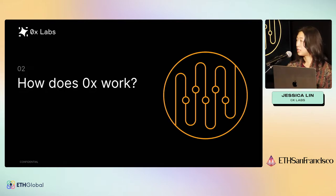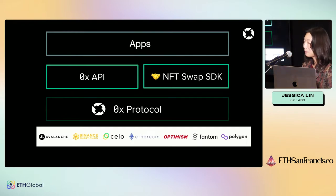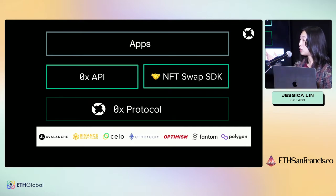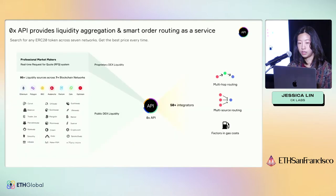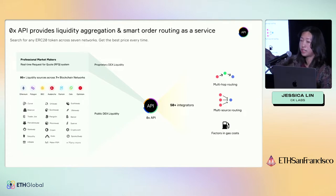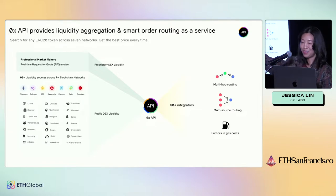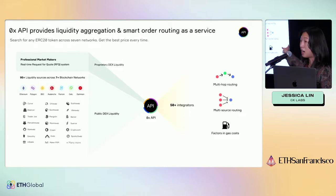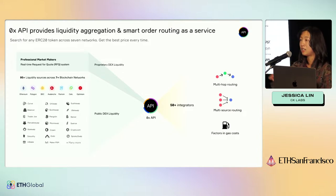Let's dive into how 0x works. We saw those different layers: the protocol, which is the smart contracts, and the API. The API works by aggregating across market makers — whether that's professional market makers providing RFQ (requests for quote) liquidity, or other sources of liquidity. The API does various routing, so it might source the best trade through a number of different hops or through multiple sources at the same time. We also factor in gas costs. This is all done behind the scenes, and applications can easily leverage that without having to do that work on their own.